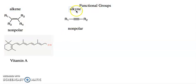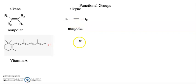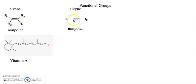Next I want to look at alkynes, which are molecules containing triple bonds. Similar to alkenes, they're a nonpolar functional group tending to have only London dispersion forces. Notice that the bond angle on the alkene is 120° and sp2 hybridized, whereas the alkyne is sp hybridized, so it tends to be linear.